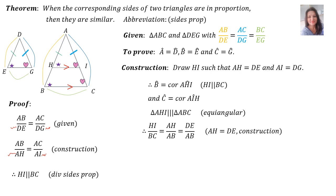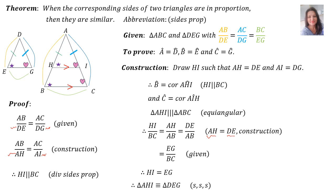Because they are equiangular, we can say that HI over BC equals AH over AB equals DE over AB. Remember, AH is equal to DE — that was the construction. And EG is equal to BC — that was given. Therefore, HI is equal to EG, which in turn means triangle AHI is congruent to triangle DEG, the small one on the left-hand side. The reason is side, side, side.